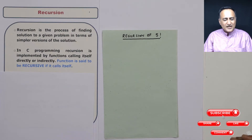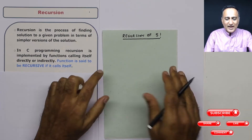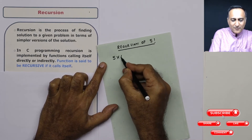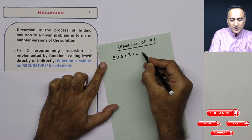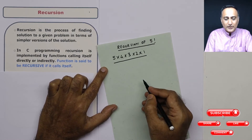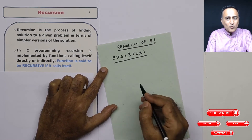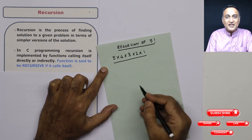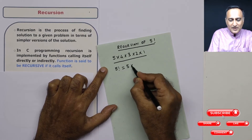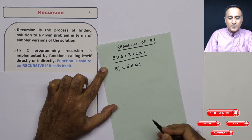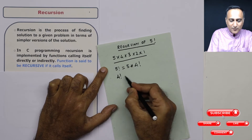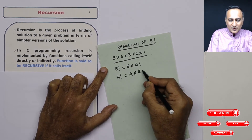Let me help you understand a bit of recursion. Let's say I want to calculate the factorial of 5. So what exactly is 5 factorial? It is 5 × 4 × 3 × 2 × 1. This is how I would calculate the factorial of 5 using a loop. Now I have one more way of thinking about 5 factorial — breaking it down into smaller sub-problems. I can first say 5 factorial is 5 × 4 factorial. But my next problem is I do not know what is 4 factorial, so I will say 4 factorial is 4 × 3 factorial.